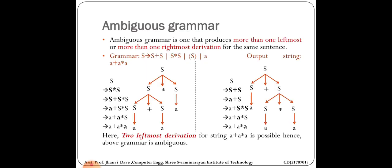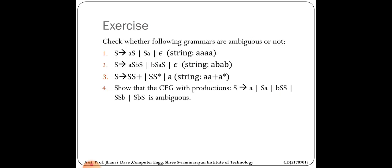There is no specific method to solve ambiguity — by rewriting the grammar we can solve it. Understand what ambiguous grammar is and what ambiguity means. Practice the examples given here. In an exam for seven marks, they may give you a grammar and ask you to explain whether it is ambiguous or not, requiring you to show two leftmost or rightmost parse trees.